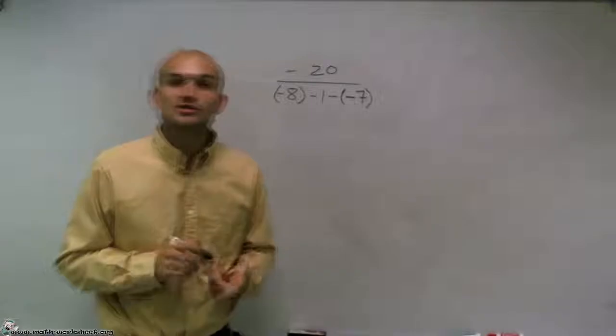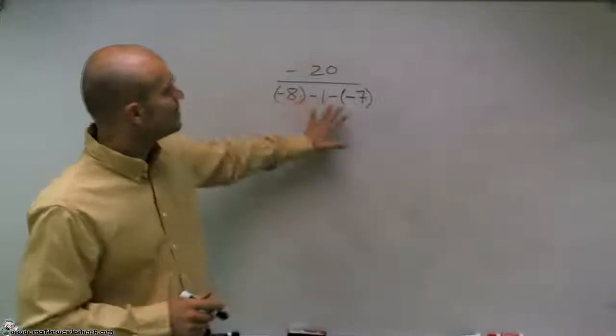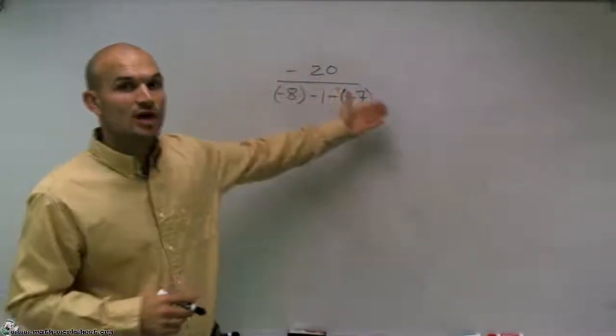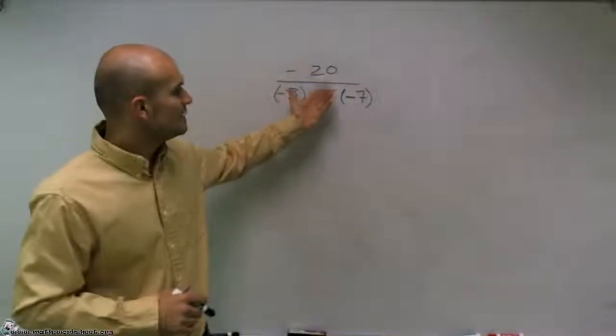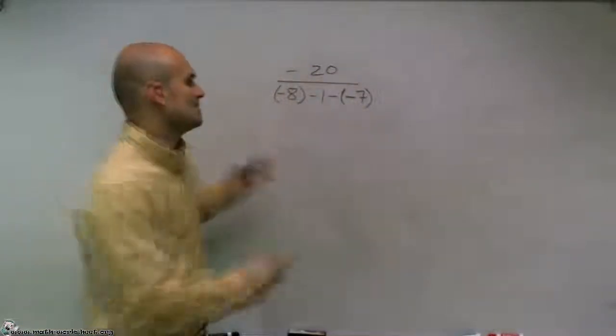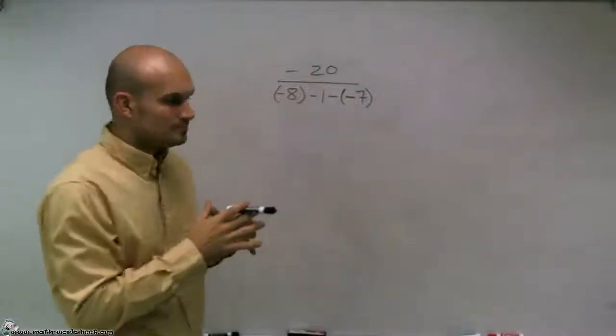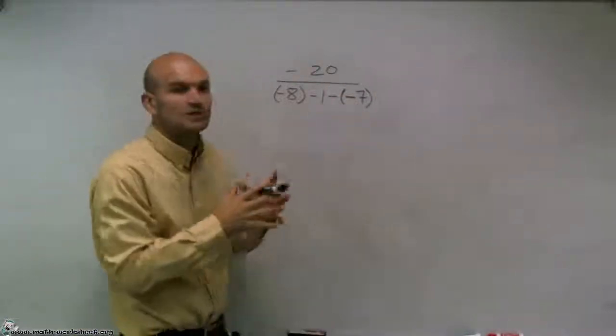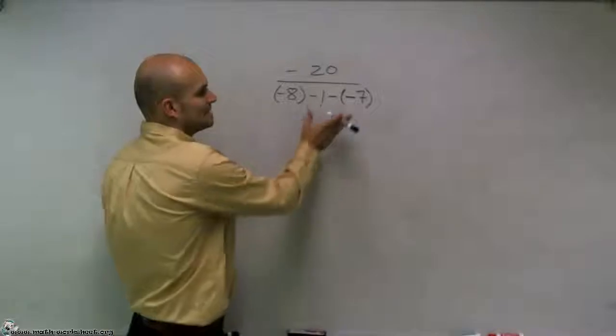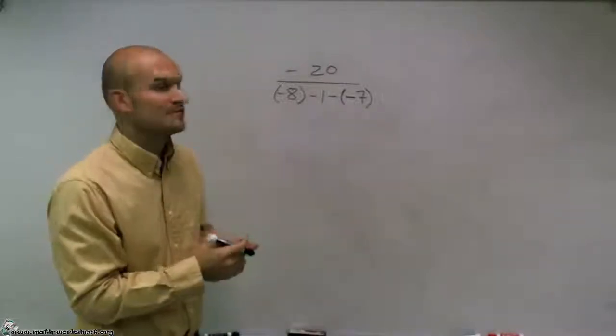The next is looking for multiplication or division. Now, I'm not seeing any multiplication, and I do see a division bar, but the problem is we don't see what numbers we're actually divided by. We're having negative 20 is divided by all of these numbers, but we can't individually go ahead and divide them. So what I'm going to do is I'm going to have to simplify this first before I can actually do my division.